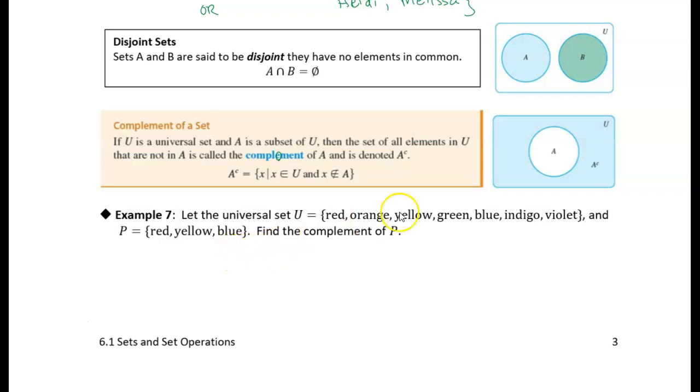So the complement of A, as it shows here, this blue-shaded region over here, it's everything outside of A but still part of the universal set. X is an element, X is part of the complement if X is in the universal set but not an element of A.